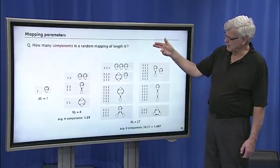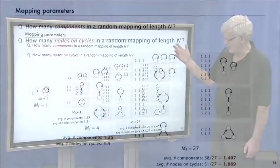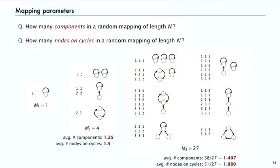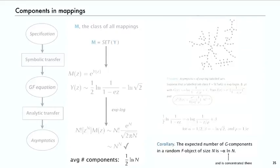But more generally, if we want to look at problems like, what's the average number of components in a random mapping? Or how many of the nodes are on cycles on average? And these are calculations for the small examples. Then we can get those just by the same process, just extending the transfer theorem slightly.